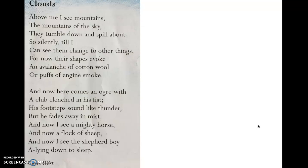Let's go ahead and look at our poem. I will read it and you can read along as well. Clouds by Colin West. Above me I see mountains, the mountains of the sky. They tumble down and spill about so silently, till I can see them change to other things. For now their shapes evoke an avalanche of cotton wool, or puffs of engine smoke. And now here comes an ogre with a club clenched in his fist. His footsteps sound like thunder, but he fades away in mist. And now I see a mighty horse, and now a flock of sheep. And now I see the shepherd boy lying down to sleep.